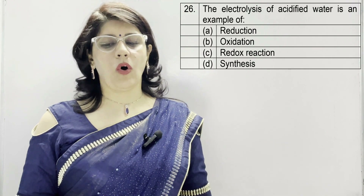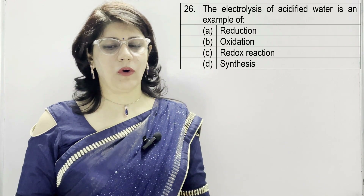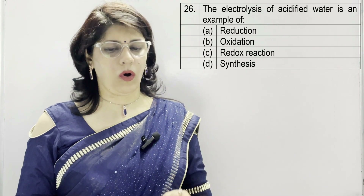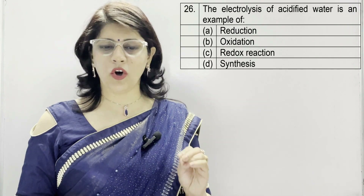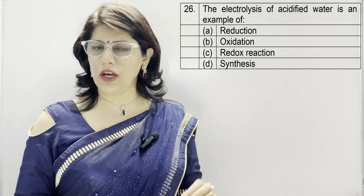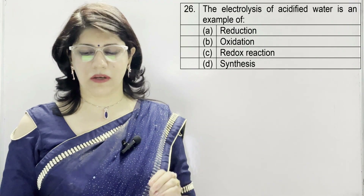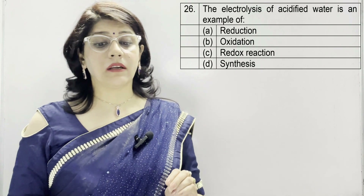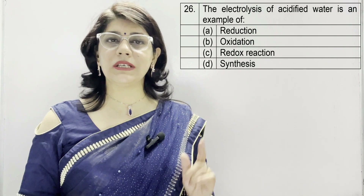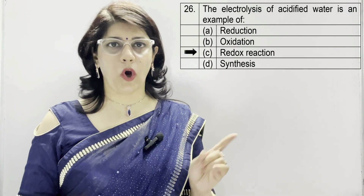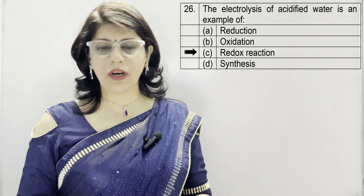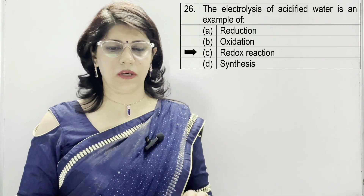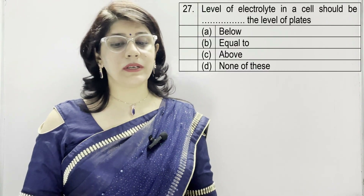Question number 26: the electrolysis of acidified water is an example of — A: reduction, B: oxidation, C: redox reaction, D: synthesis reaction. The correct option is C — redox reaction, meaning a combination of reduction and oxidation.